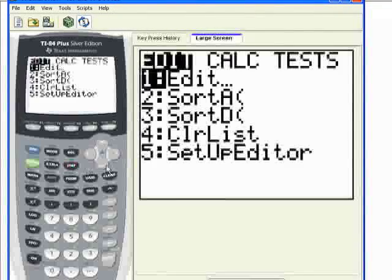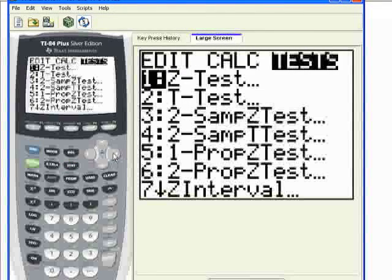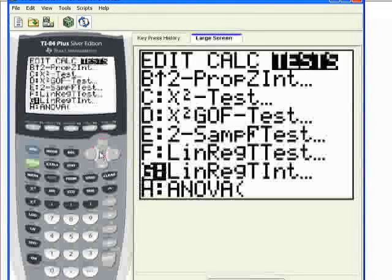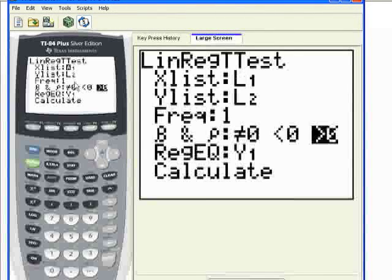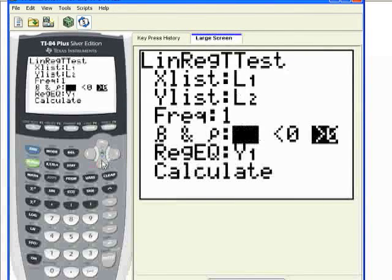Let's jump to the calculator now. Go to stat, move over to test, and go to linreg t-test. That's the same thing we did for correlation. My x data is in L1. It's really important that you line up the data properly. I'm going to use pollution to estimate dead fish, so pollution needs to be on the x-axis. That's the independent variable. The number of dead fish, we're going to think of as the dependent variable. Here's the beta for our hypothesis statement. Here's rho. Testing these are equivalent. What I'm looking for is greater than 0.